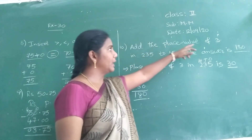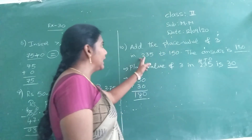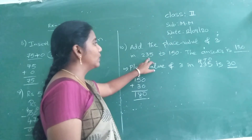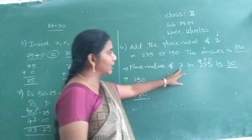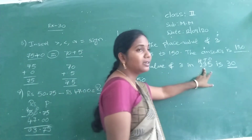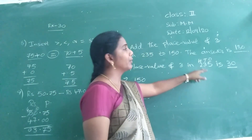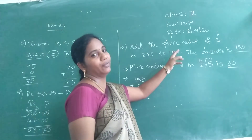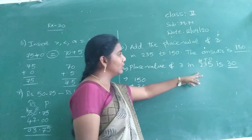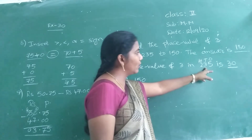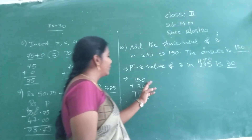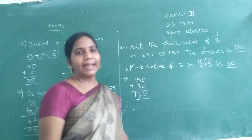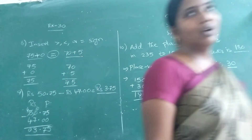Once again: add the place value of 3 in 235 — first find the place value of 3, which is 30. Then add to 150. If you add 150 to 30, you will get 180.